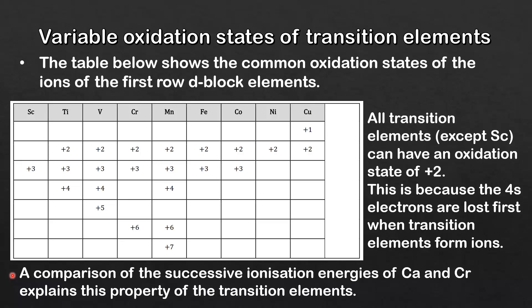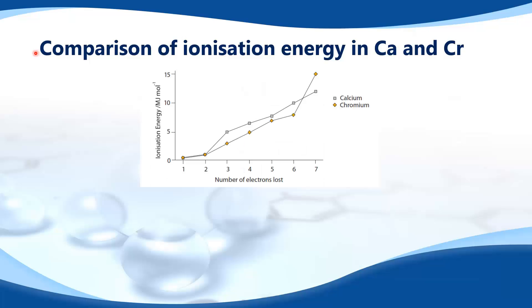A comparison of the successive ionization energies of calcium, which is an s-block element, and chromium, which is a transition element, explains this property. To understand why transition metals have variable oxidation states, we'll look at the comparison of successive ionization energies in calcium and chromium.